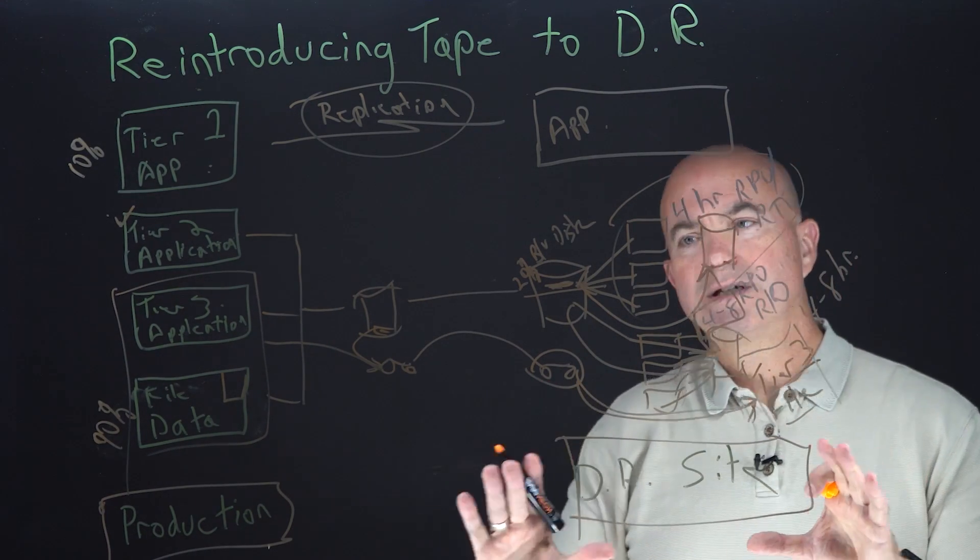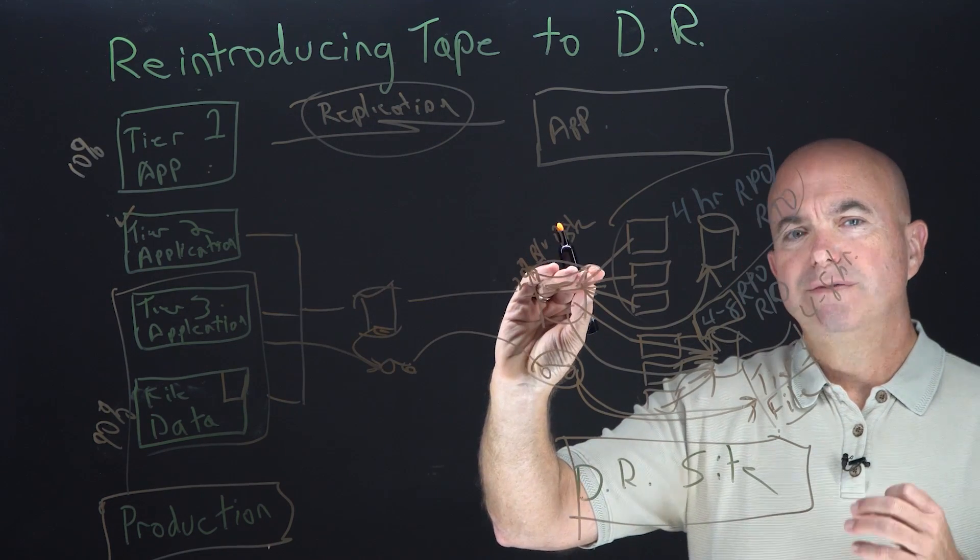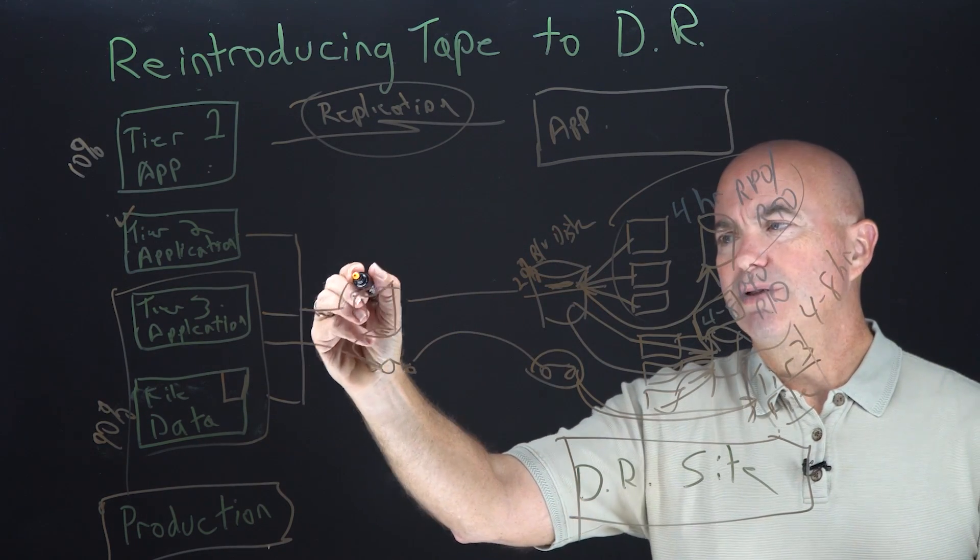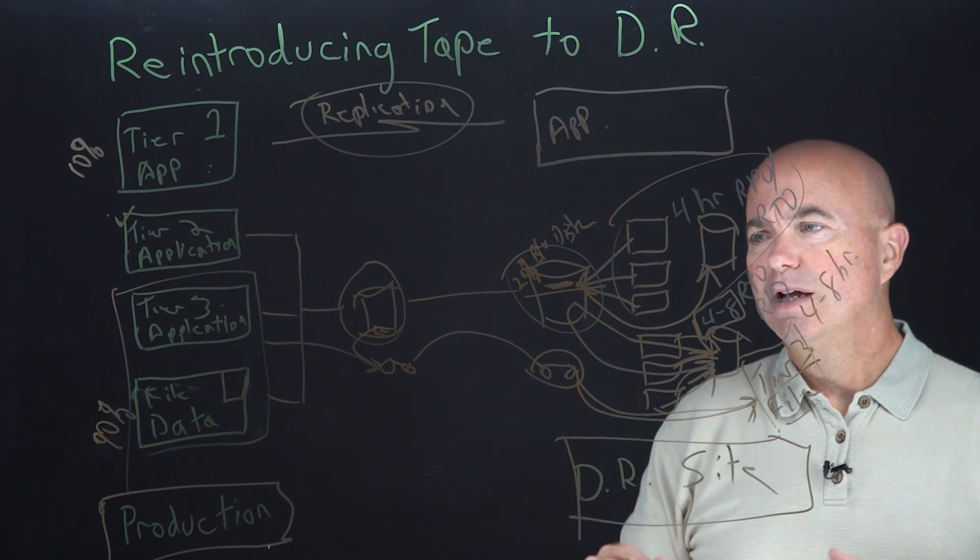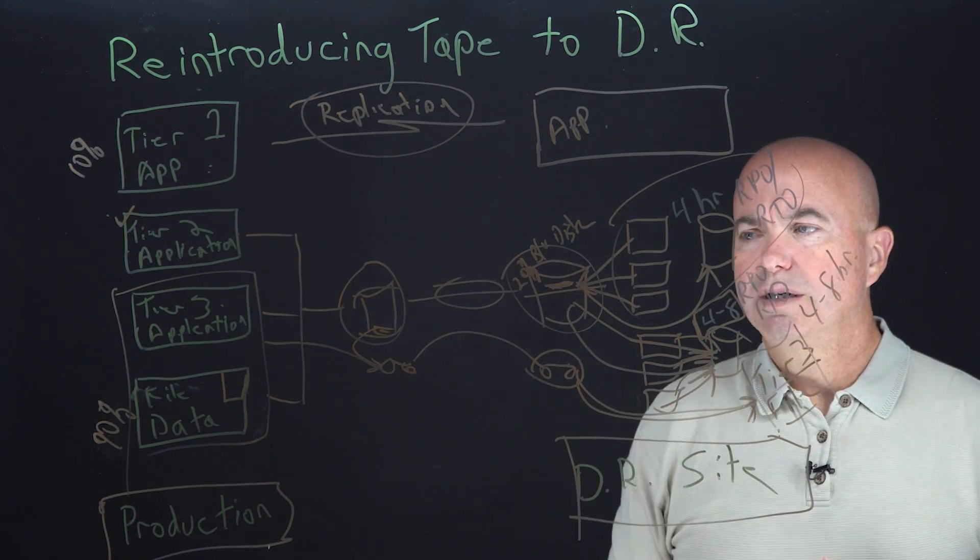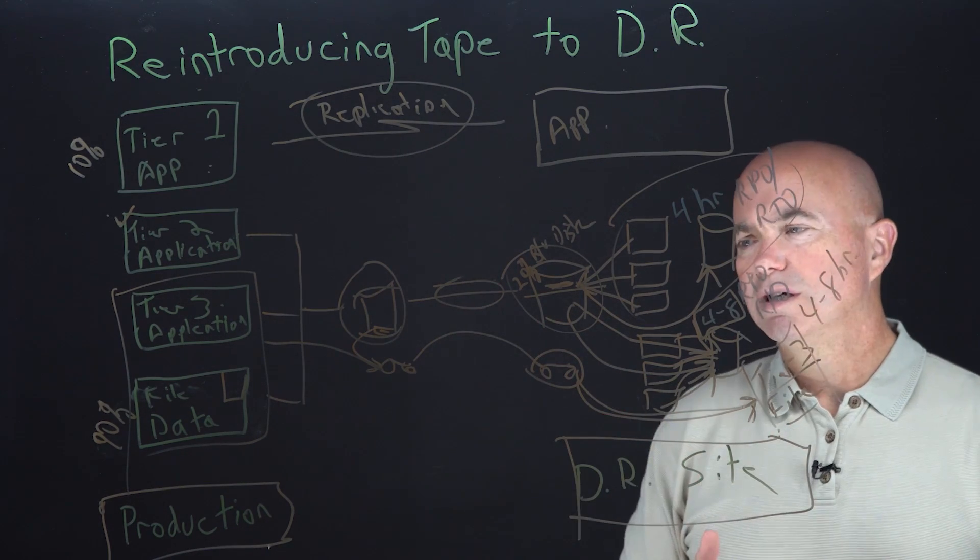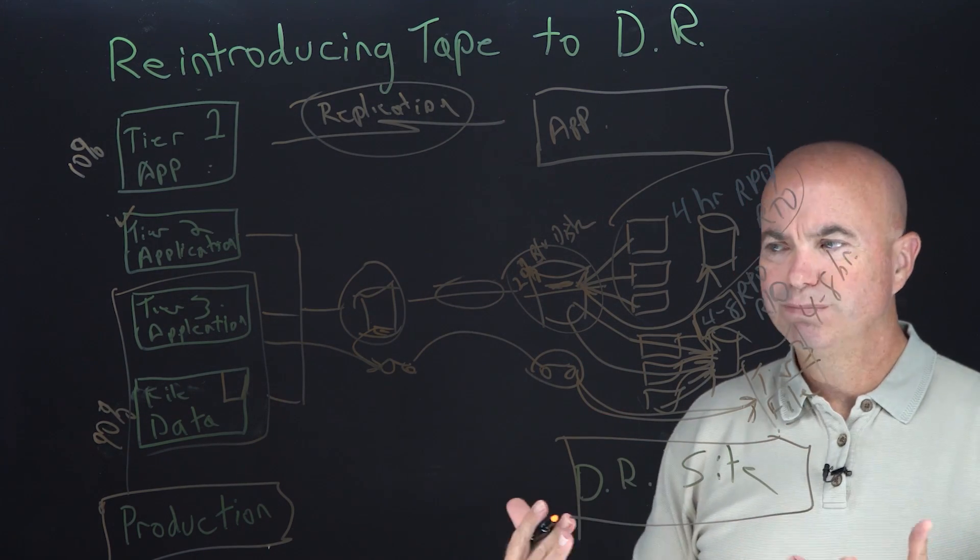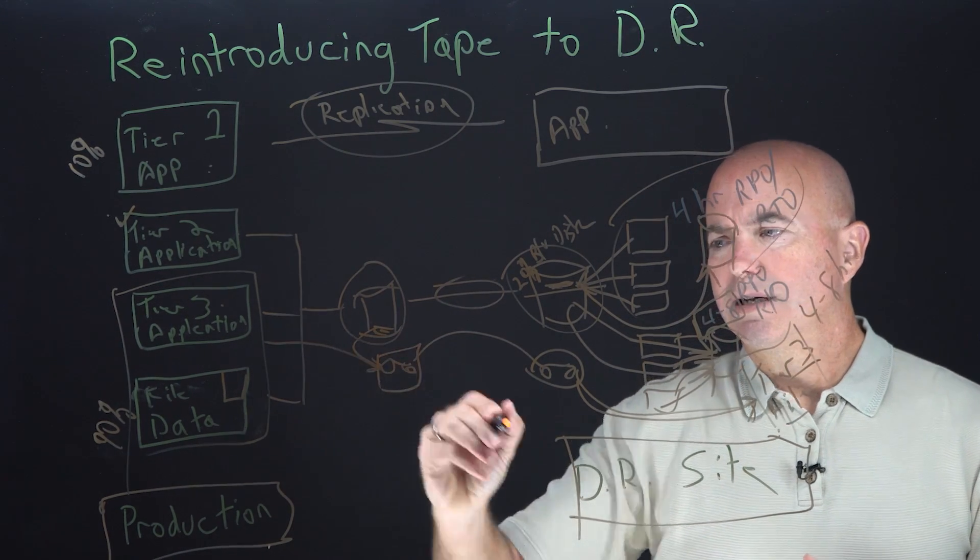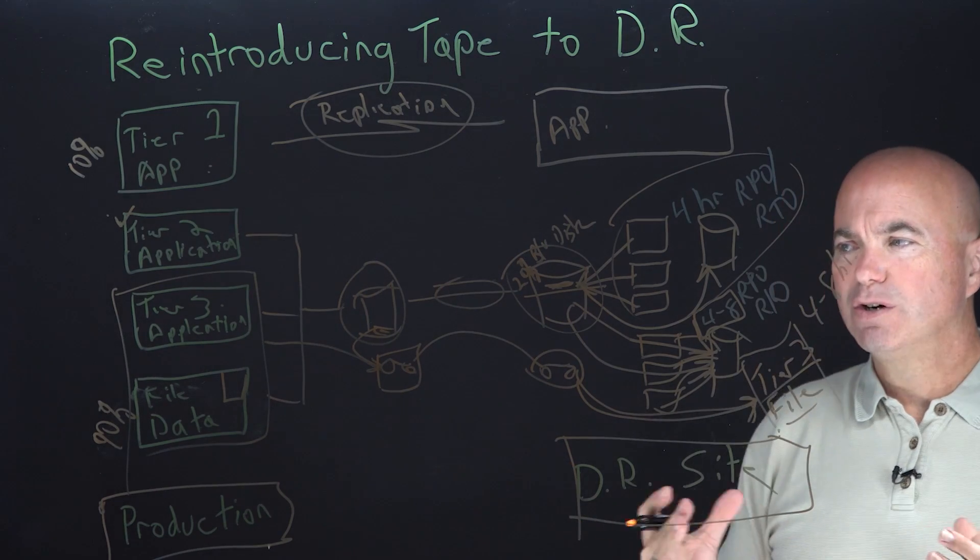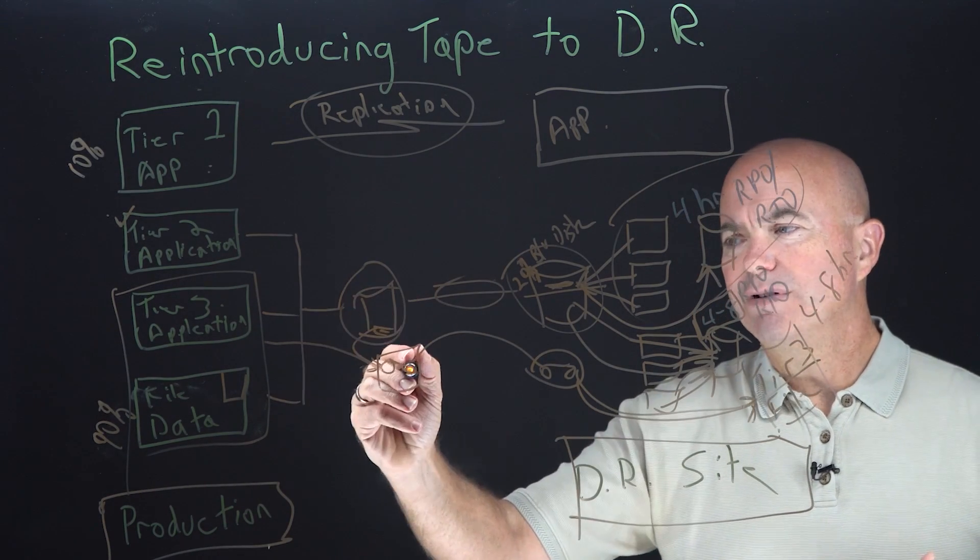The result of doing this is several. Number one, we reduce the cost of backup storage, both in the primary location and in the secondary location. We reduce networking cost substantially because we're not transmitting as much over it so we can dedicate the bandwidth for other purposes.